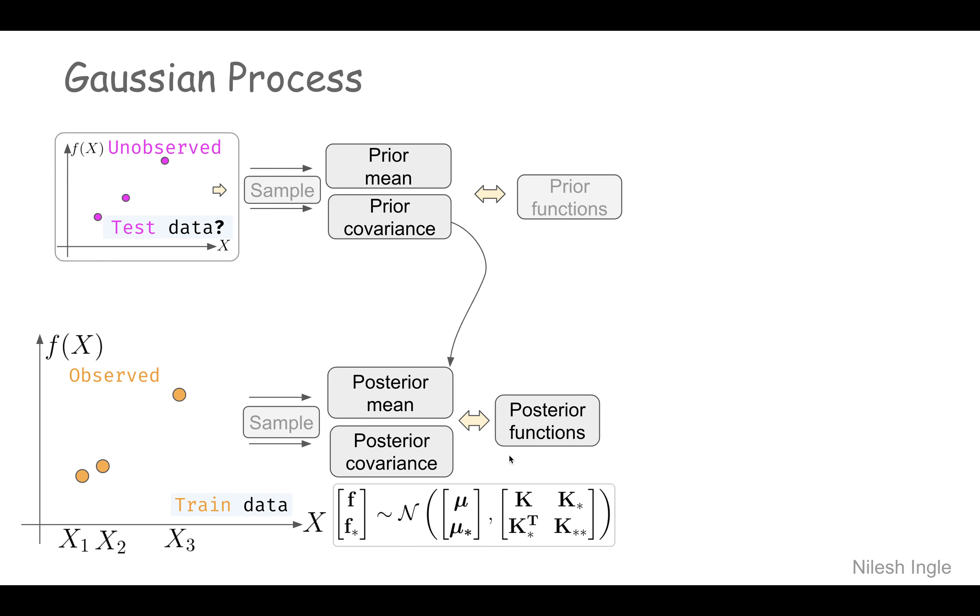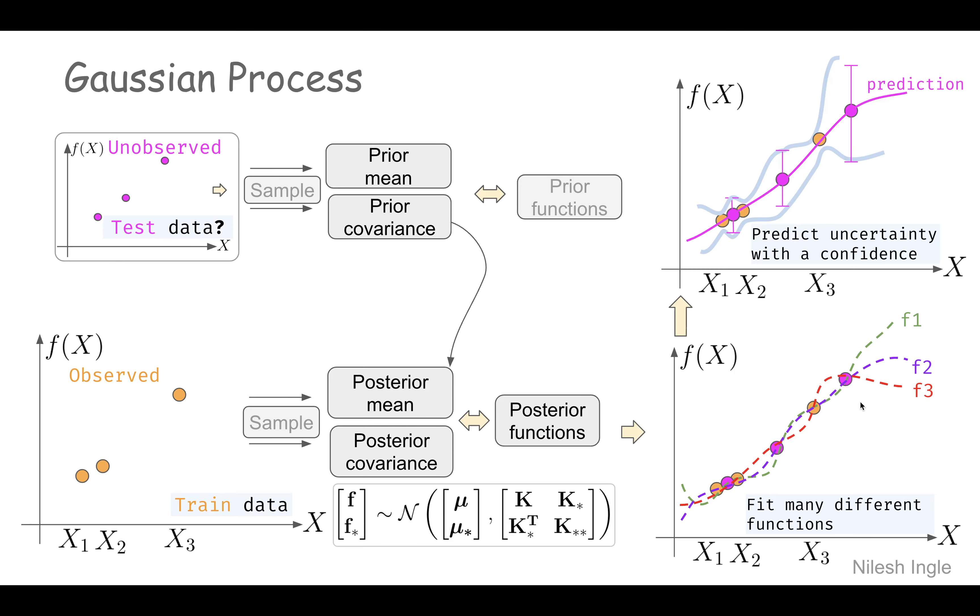From that we can get our predictions or posterior functions. Here on the plot we see these dotted lines—these are different functions that we can create based on this information.